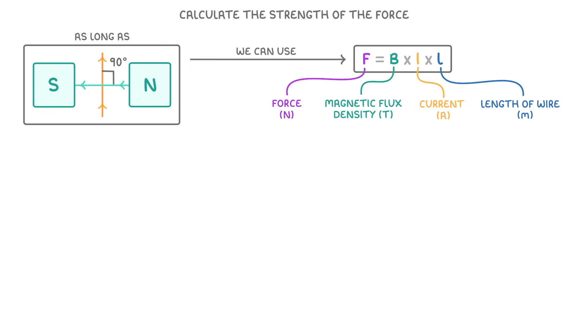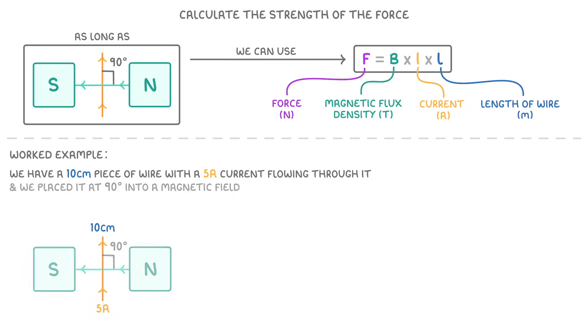So let's imagine that we had a 10cm piece of wire with a 5A current flowing through it, and we placed it at 90 degrees into a magnetic field that had a magnetic flux density of 0.4 teslas. What force would it experience?